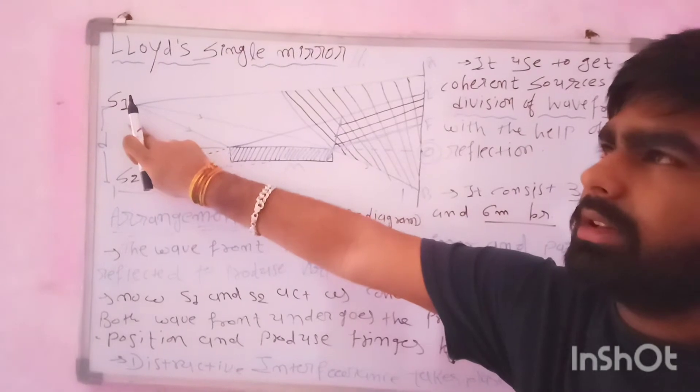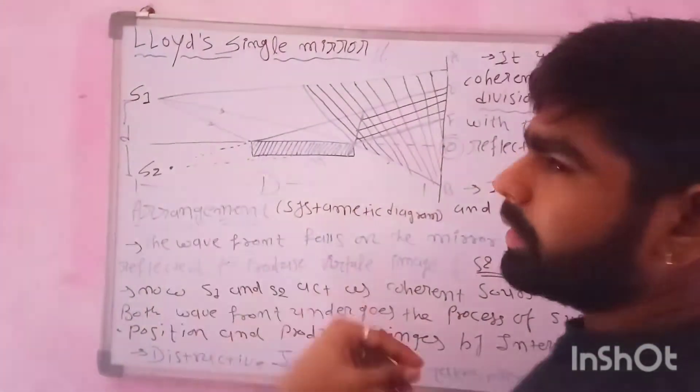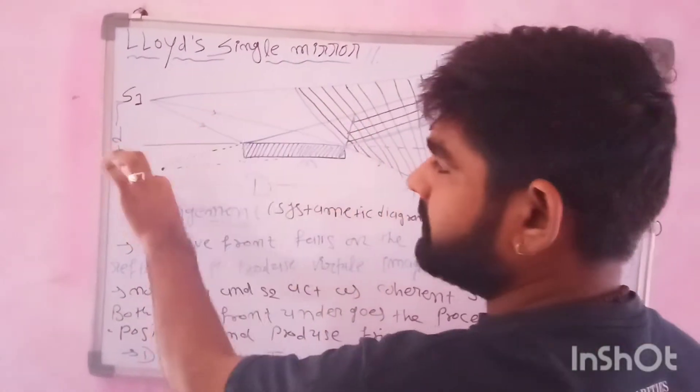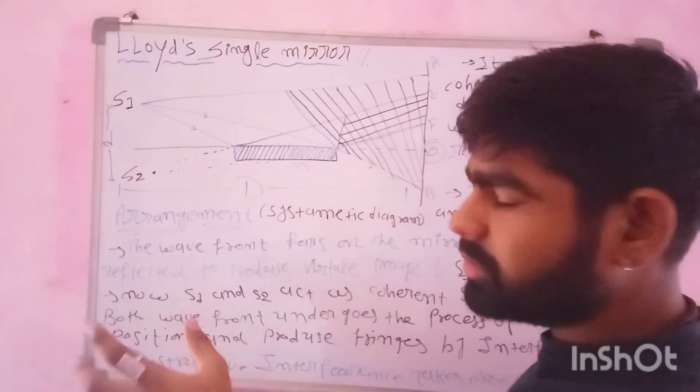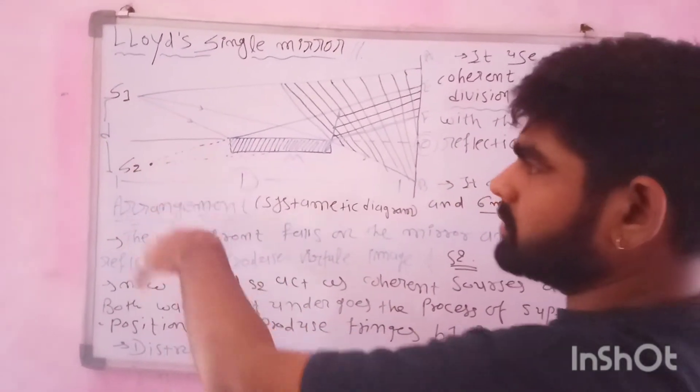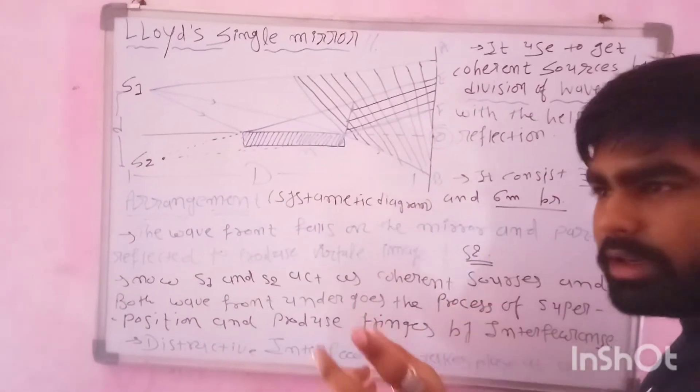As you can say, it is a sodium lamp placed here. The waves of the wave front is emitted here, and it is partially reflected and produces S2, that means the virtual image of S1. Now S1 and S2 both act as coherent sources.